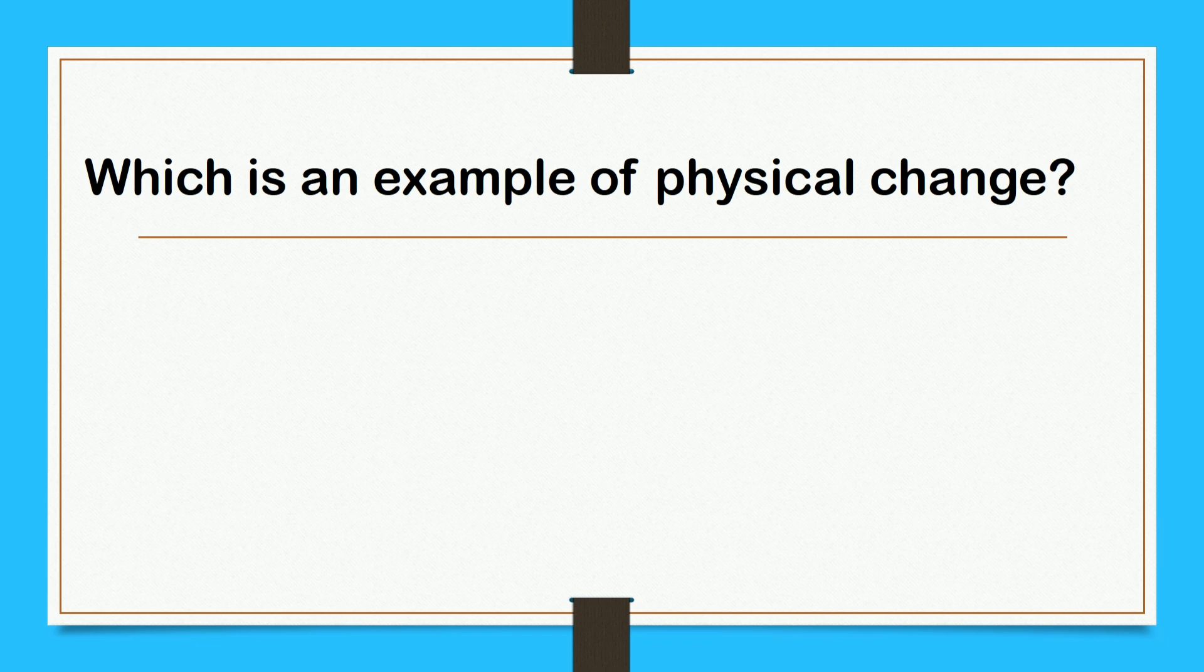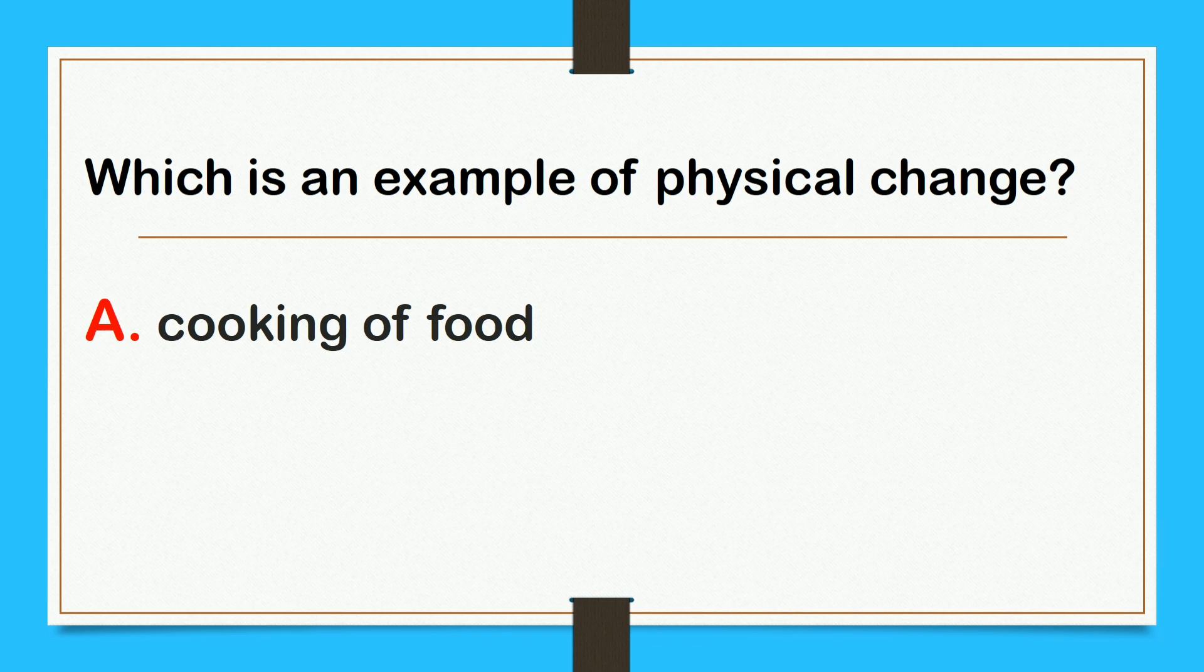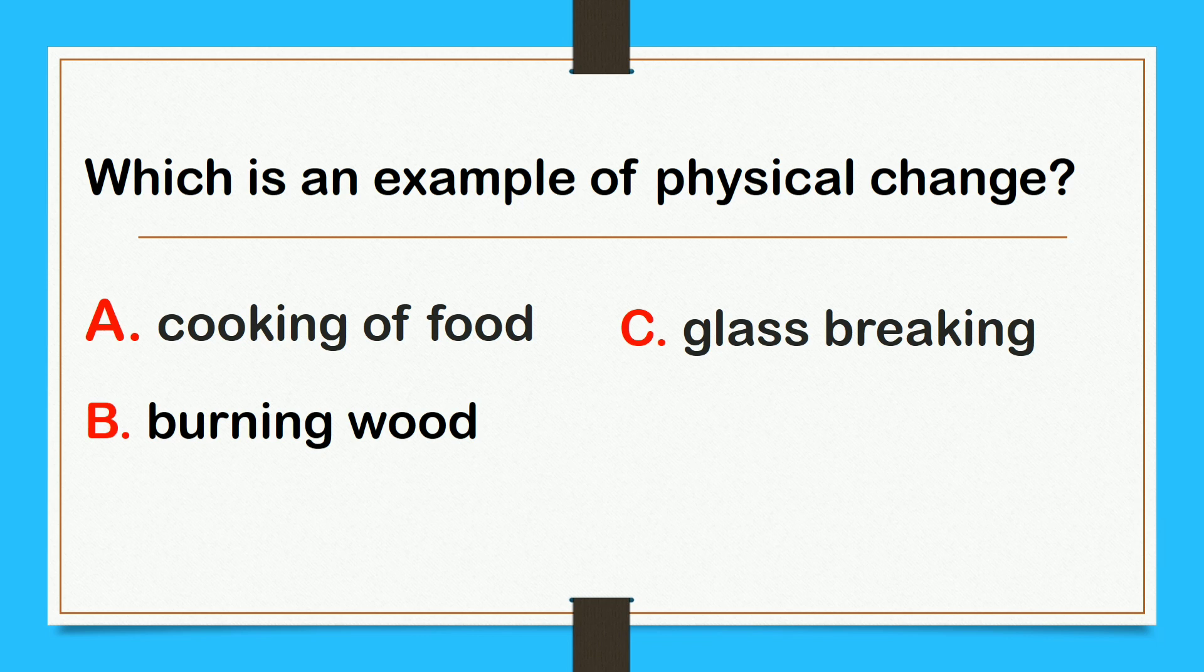Which is an example of a physical change? A, cooking of food. B, burning wood. C, glass breaking. Or D, ripening of fruit. The answer is letter C, glass breaking.